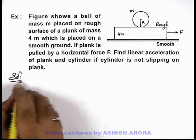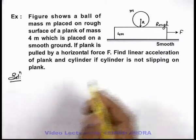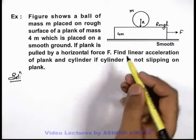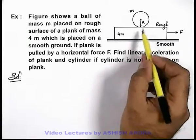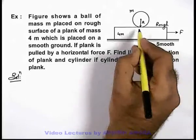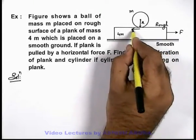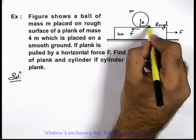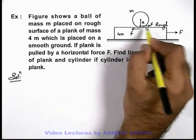In this situation, we just carefully analyze motion of the two bodies. On applying a force F on the plank, due to roughness, here a friction acts on it, and the same friction will act on the ball in opposite direction.